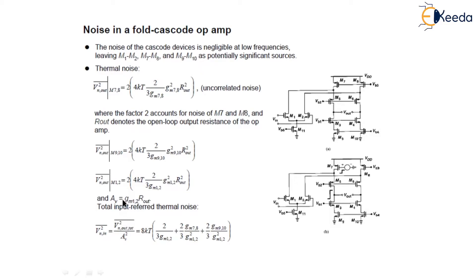Now, the gain of the device is given as Gm1-2×Rout. The total input-referred thermal noise is given as V²n,in equals V²n,out,total upon A².